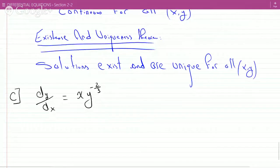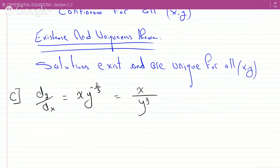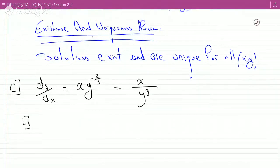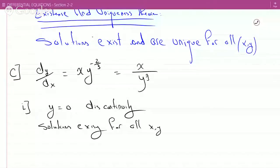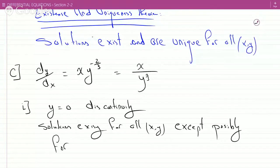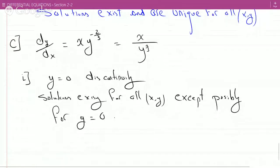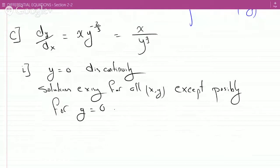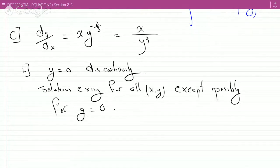We could rewrite this as x over y to the two-thirds, so for all x, y except possibly for y equals zero. No, you don't have to, he's just saying determine the reasons or solutions exist, we've answered, and then he said, according to the existence and uniqueness theorem, you don't have to verify.